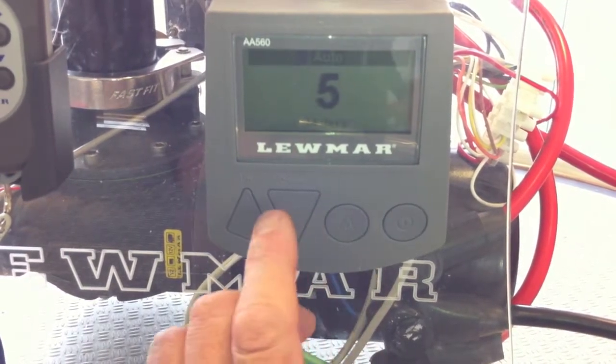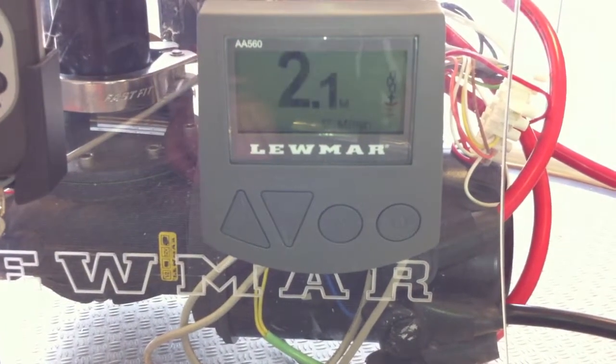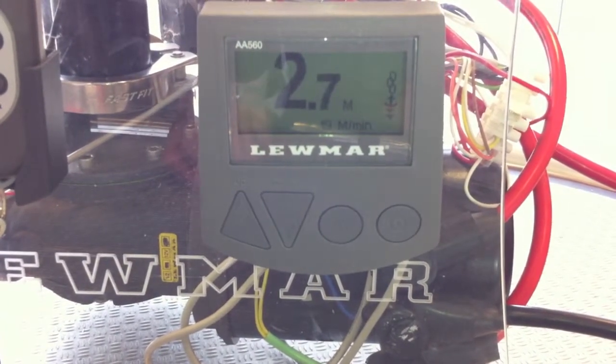Then if I preset again to the 5 metres preset depth, press the button, it will automatically let out that amount of chain.